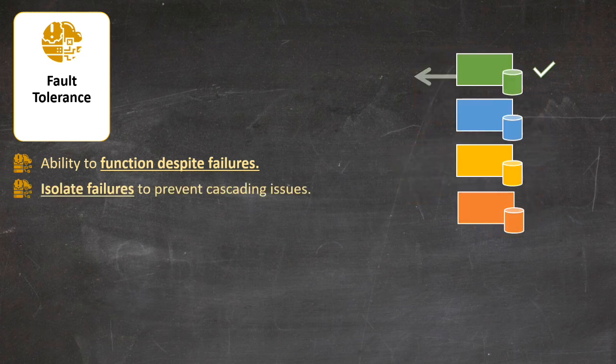One common strategy is to isolate the failure from the rest of the system. By implementing fault tolerance, we ensure that a single point of failure doesn't bring down the entire system, preserving data integrity and user experience.